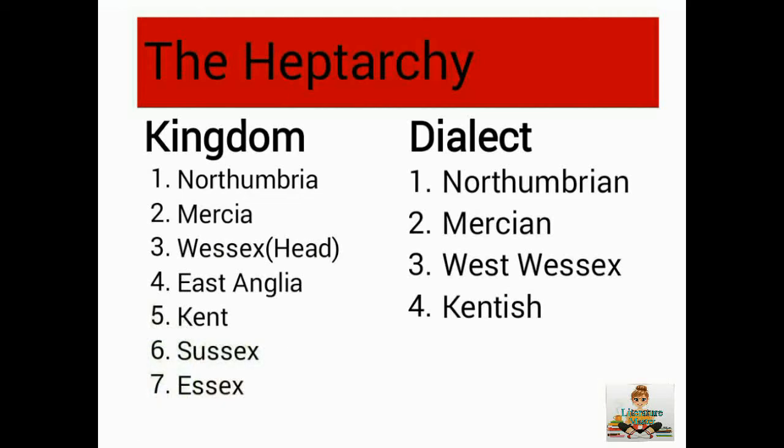The seven kingdoms — Northumbria, Mercia, Wessex, East Anglia, Kent, Sussex, and Essex — can be seen on screen. Likewise, four dialects were spoken: Northumbrian, in which literature was produced first; Mercian; West Saxon (Wessex); and Kentish. West Saxon gained supremacy because it was the dialect of more civilized and powerful people, and also the dialect of the glorious King Alfred the Great. The Anglo-Saxon Chronicle was also written in this dialect.